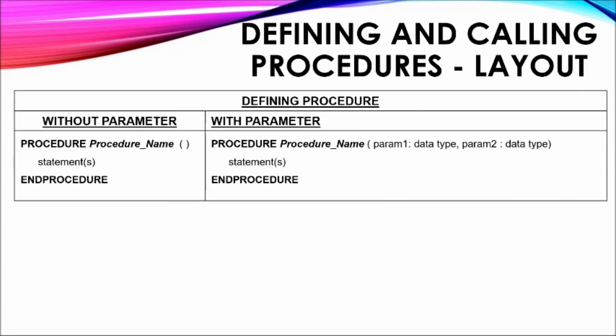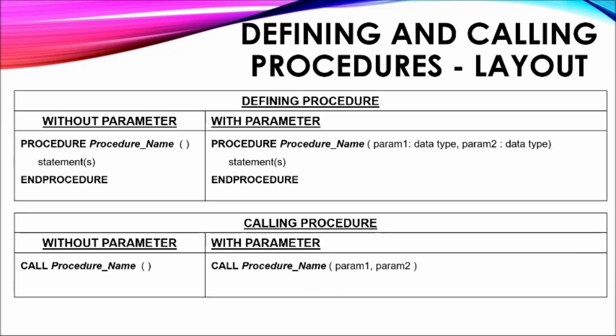Defining and calling procedures: Procedures can be defined with or without parameters being passed to them. The module type is specified followed by the name given to the procedure. If parameters are used, the name of the parameter and its data type are specified. If more than one parameter is being passed, each group of parameter name and data type is separated by commas. When procedures are called, the keyword CALL is used followed by the name of the procedure and the parameter being transferred.